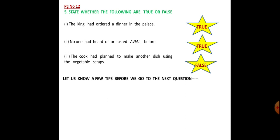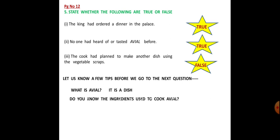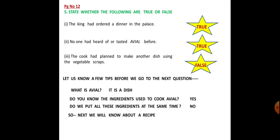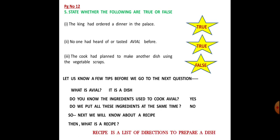Now let us know a few more tips before we go into the next question. What is avial? We all know it is a dish — the traditional dish of Kerala. Do you know the ingredients used to cook avial? Yes, we have been dealing with it. Do we put all these ingredients at the same time to cook avial? No, not at all. So next we will learn about a recipe. What is a recipe? A recipe is a list of directions to prepare a dish — the steps which are followed to prepare a dish.